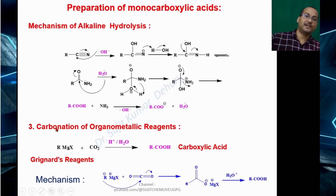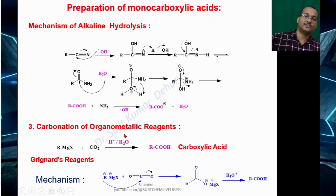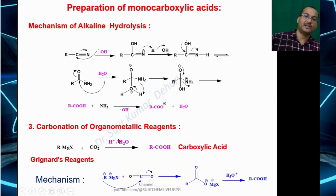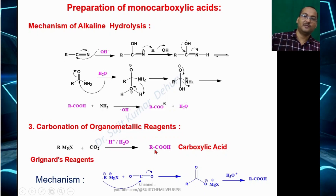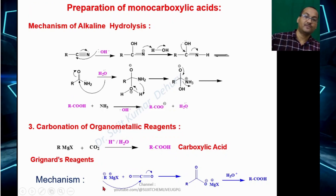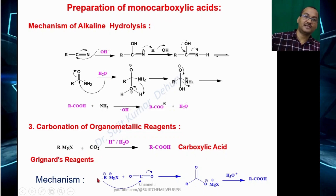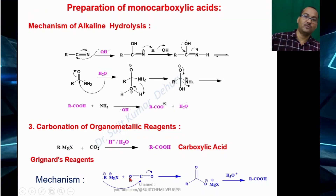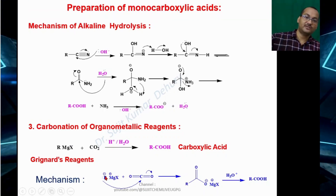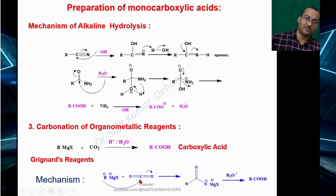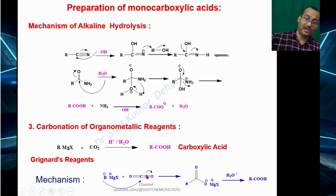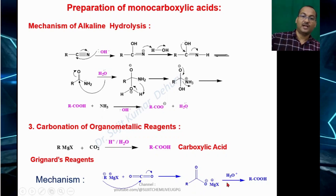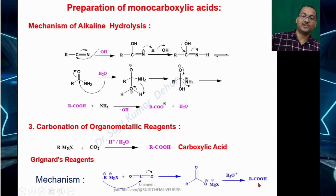Another method for preparation of carboxylic acid is carbonation of organometallic reagents. RMgX (Grignard reagent) reacts with carbon dioxide in the presence of acid to give carboxylic acid. RMgX can be written as R− and MgX+. R− acts as nucleophile and attacks the electrophilic carbon of CO2 (C=O, C=O), breaking the C–O bond on oxygen. The resulting product upon hydrolysis gives carboxylic acid.